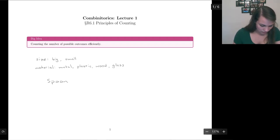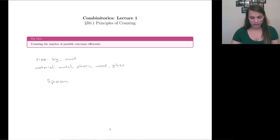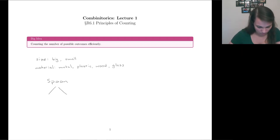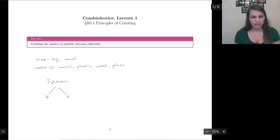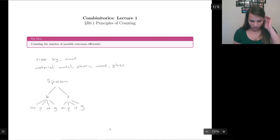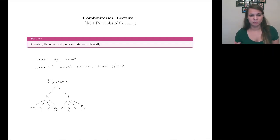You can think about all those combinations using something called a tree. We have a spoon, and the first option we look at is whether it's big or small. Once we've determined that, we decide what kind of material it is — metal, plastic, wood, or glass — and then we do those same options for the small spoon. All in all, we get eight different types of spoons.